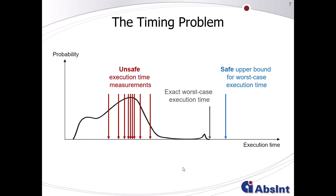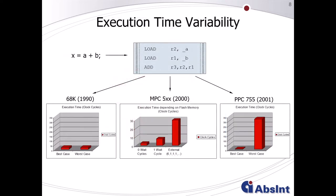In principle, you can distinguish two different reasons for execution time variance in a single task. The first is that you might execute different code parts within the same task depending on dynamically computed program conditions. On the other side, you might have time variability because of the underlying hardware. For example, this simple assignment adding two variables a and b and writing the result to x is translated by a compiler into instructions: load variable a into register r2, variable b into register r1, sum both into r3.